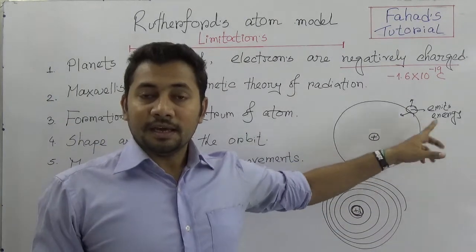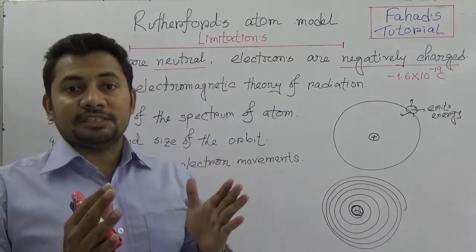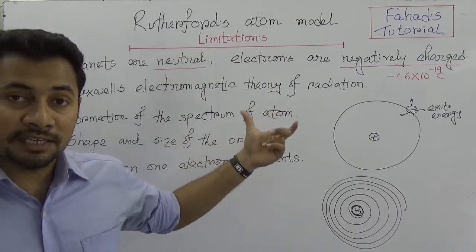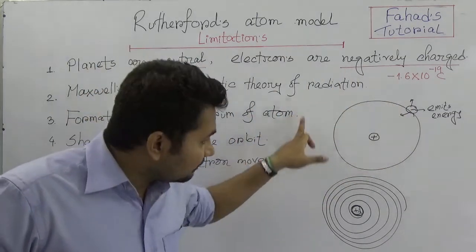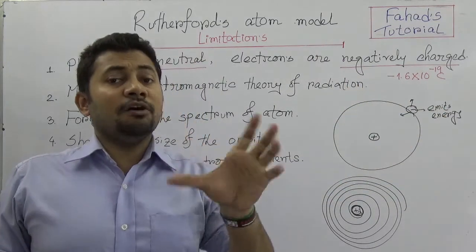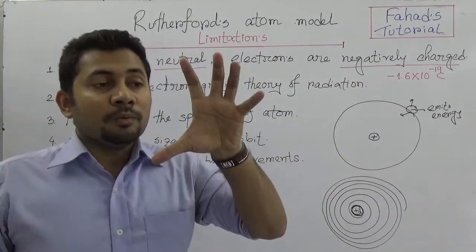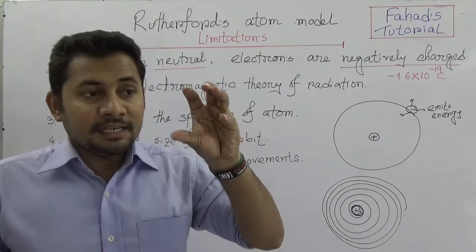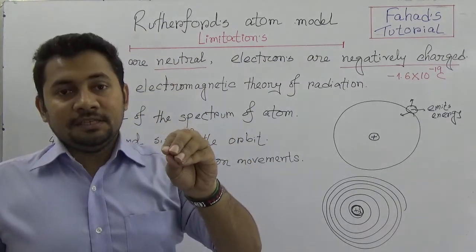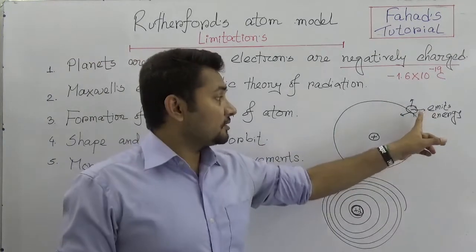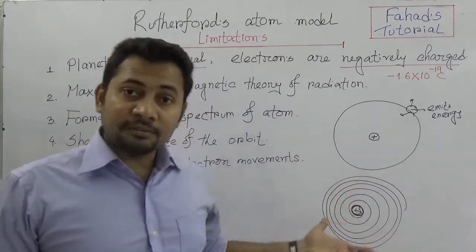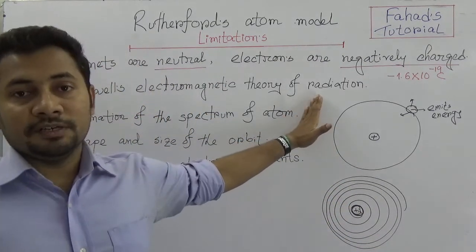According to Rutherford's model, electrons continue revolving without collapsing — but this creates a contradiction. According to Maxwell's electromagnetic theory, a charged particle revolving will emit energy, the radius of its circular pathway will gradually decrease, and ultimately the electron will fall into the nucleus, meaning there would be no existence of electrons outside the nucleus. That is why, according to Maxwell's law, Rutherford's model is not correct.